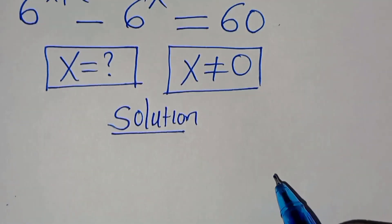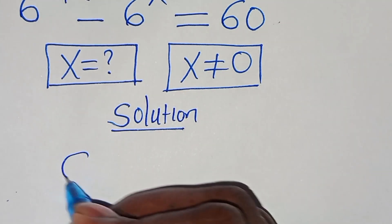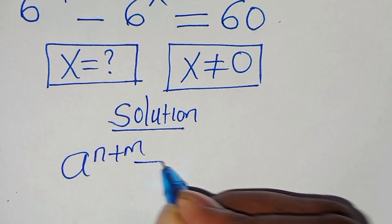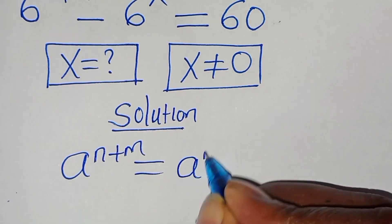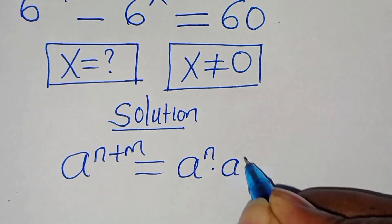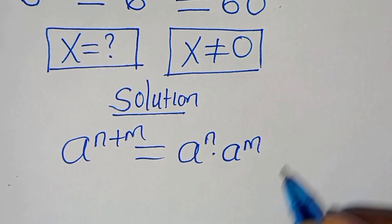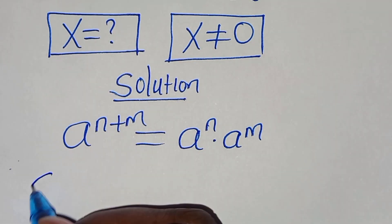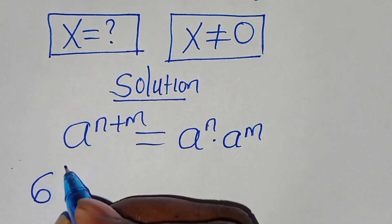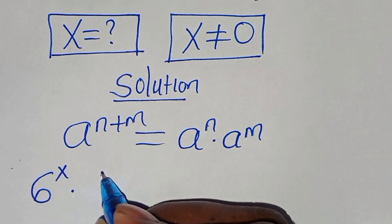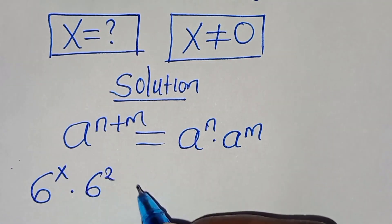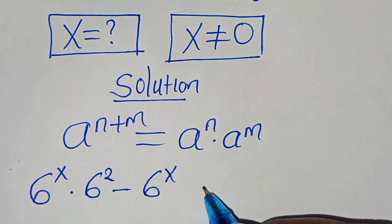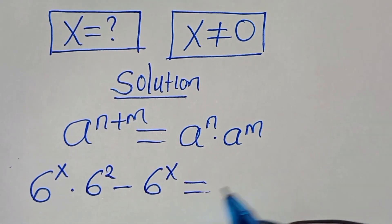This exponential equation is in the form of a to the power of n plus m, which we can express as a to the power of n times a to the power of m. Applying this exponent property, we have 6 to the power of x times 6 to the power of 2, subtract 6 to the power of x. This is equal to 60.